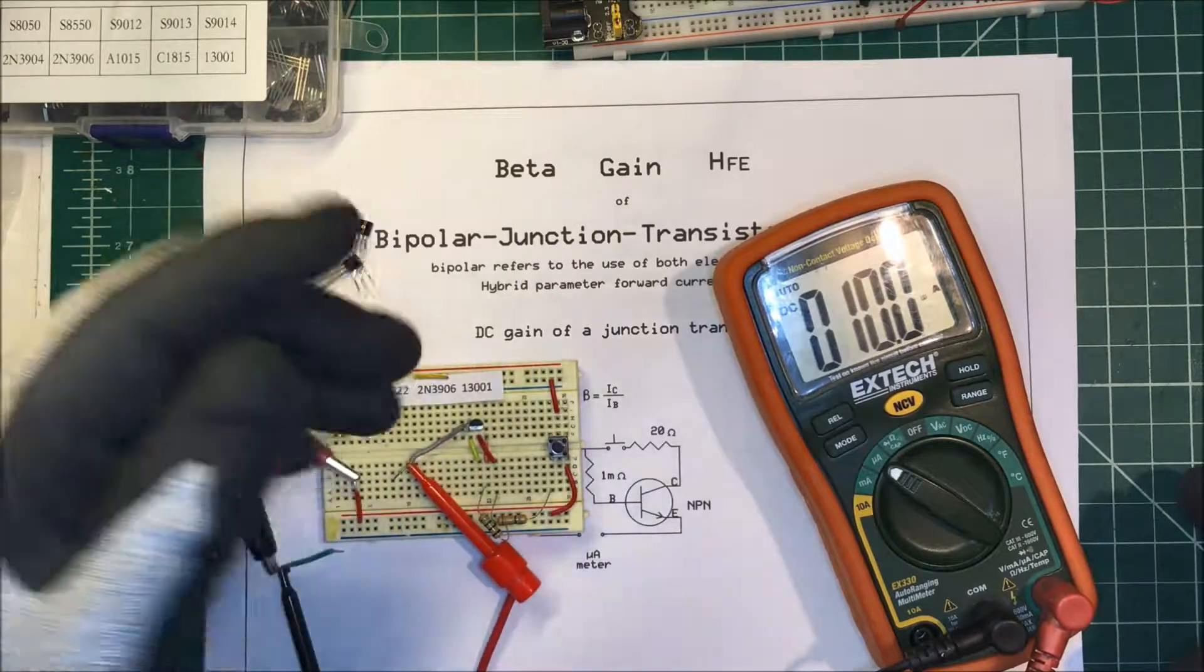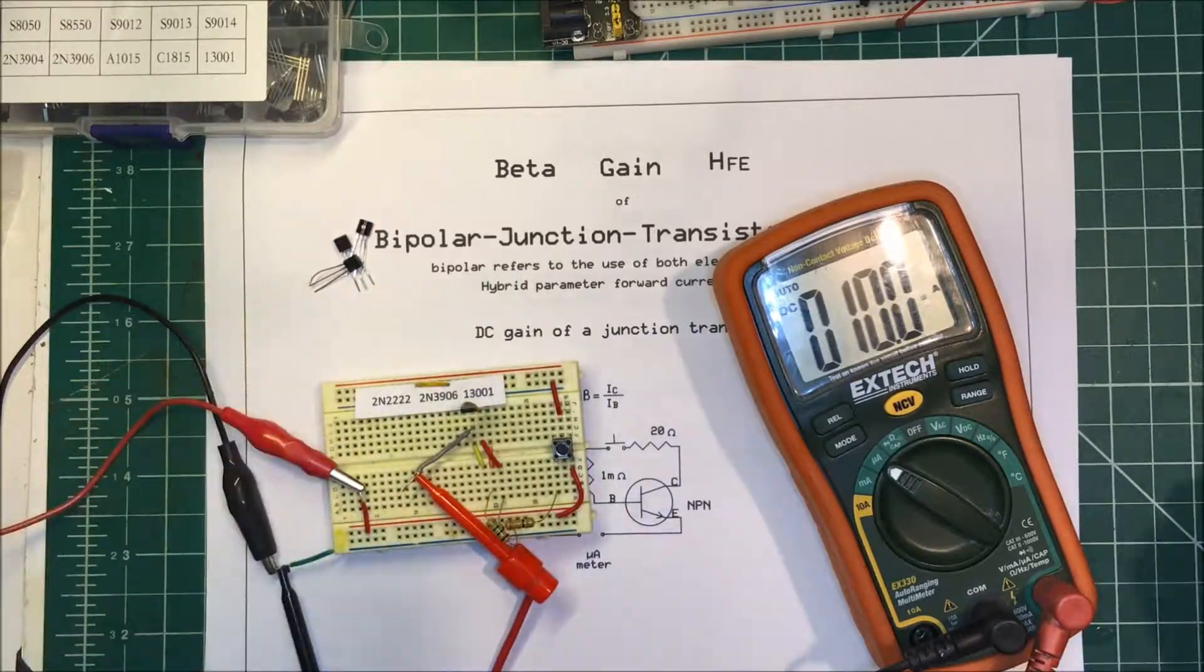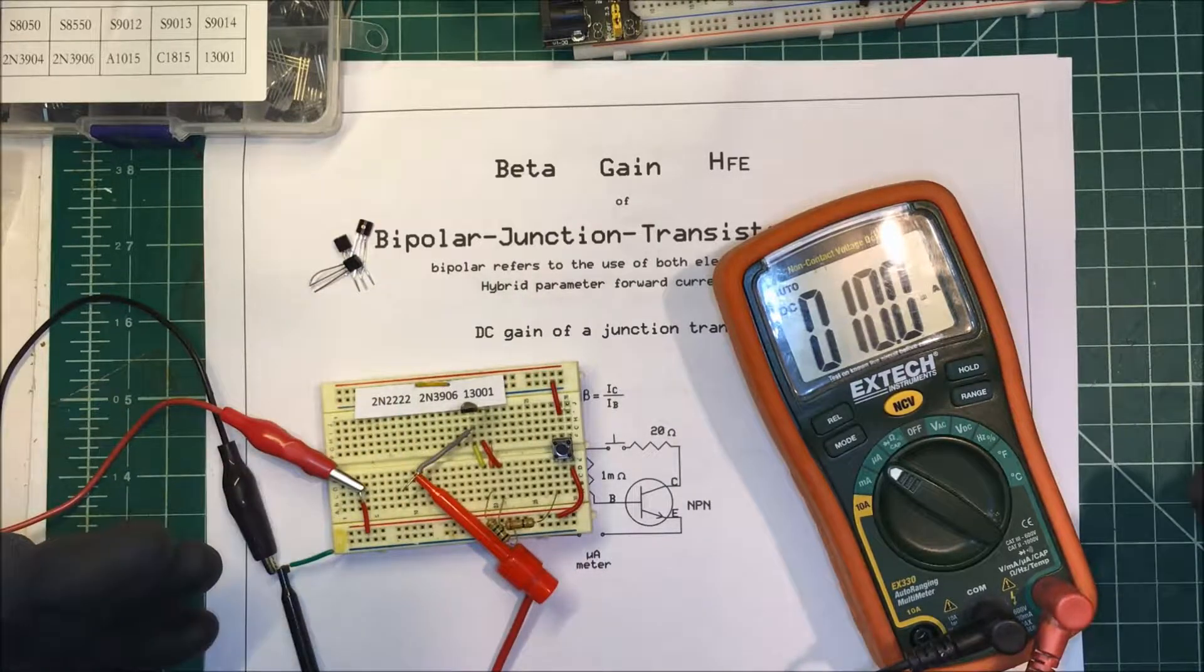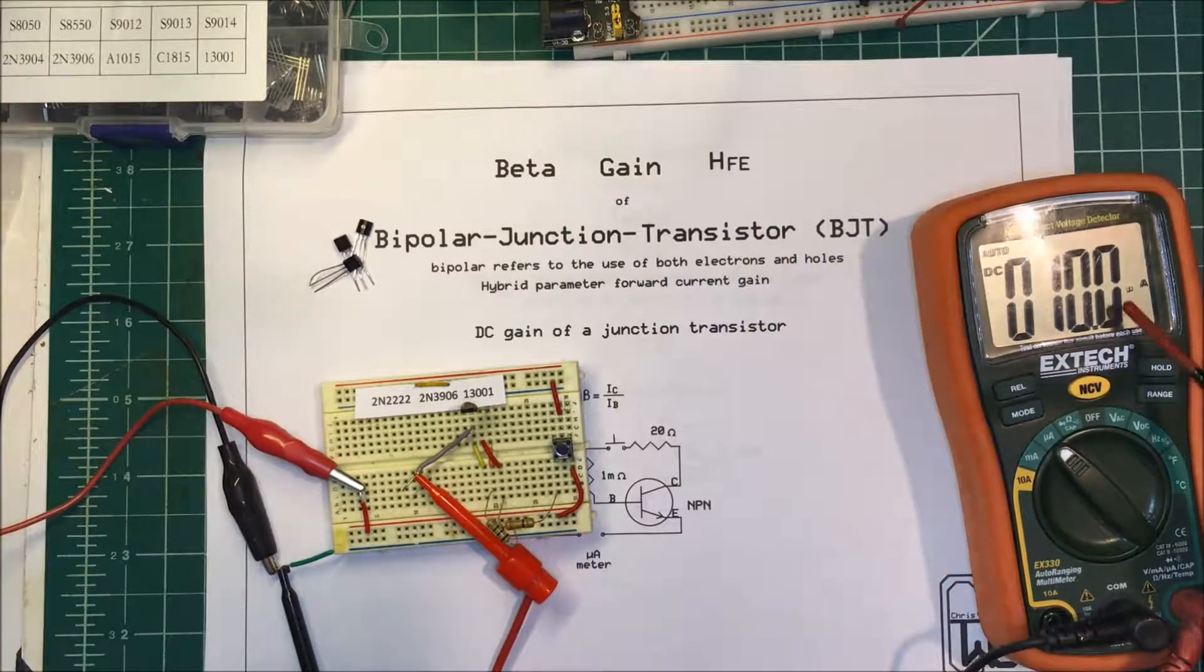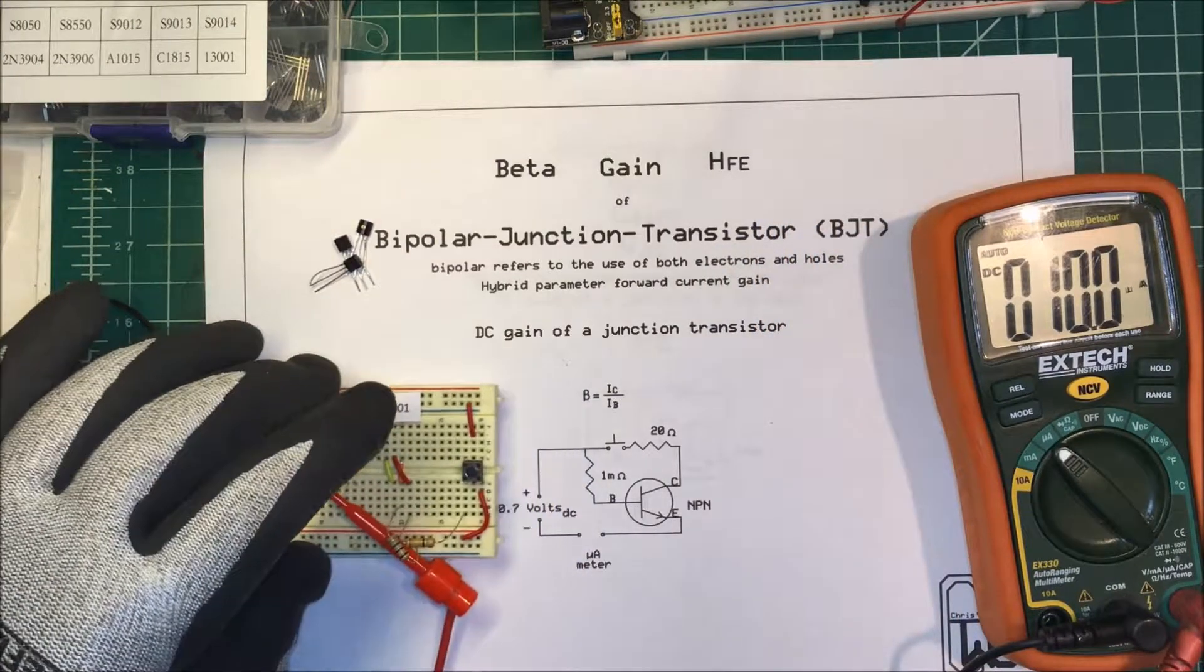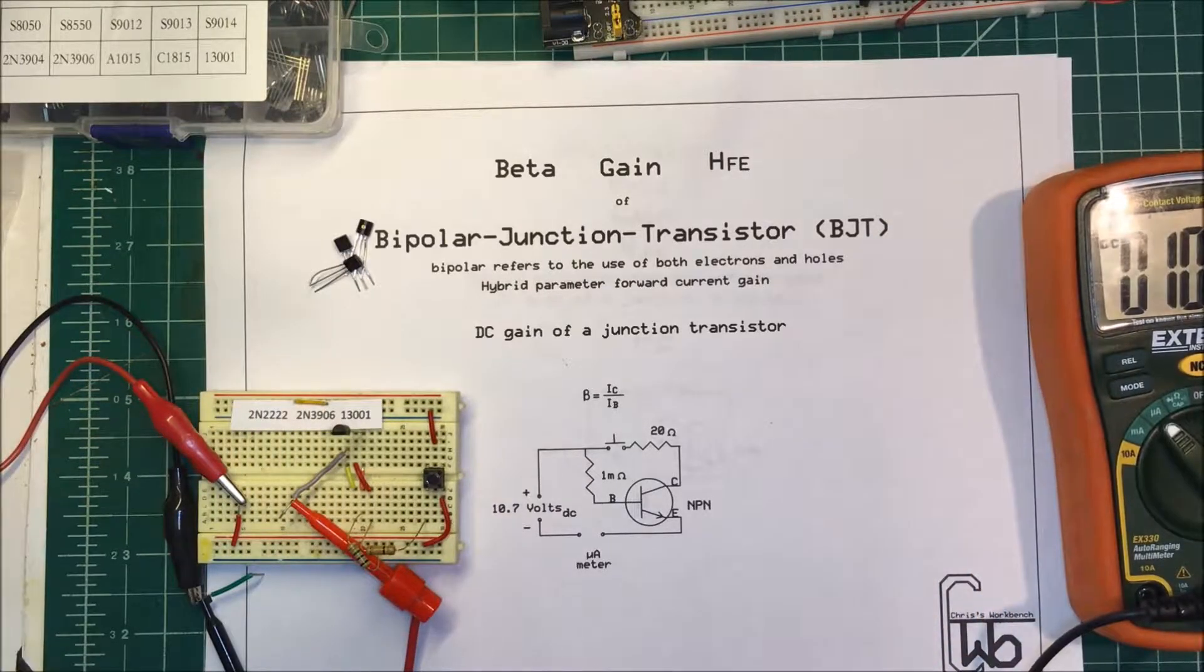So yeah, this thing works pretty good—just a simple way to check gain on a transistor. If you start with your 10 microamps, then it makes the math easy to divide it out. And that's it. Thank you.